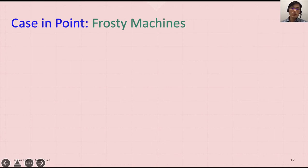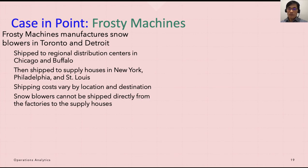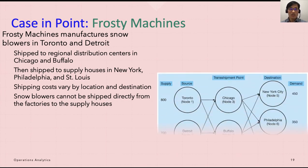The case in point is Frosty Machines. Frosty Machines manufactures snow blowers in factories located in Toronto and Detroit. These are shipped to the regional distribution centers in Chicago and Buffalo, and then delivered to the supply houses in New York, Philadelphia, and St. Louis, as you can see in this network diagram.